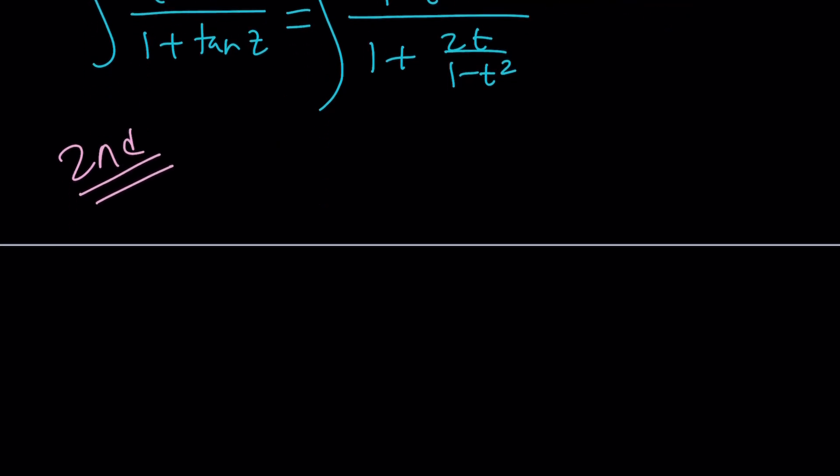So here's how our second method works. Remember, with the first method I told you, I can turn this into cosine z over cosine z plus sine z dz. We wrote tangent as sine over cosine, and then we made a common denominator, so on and so forth. Remember that?